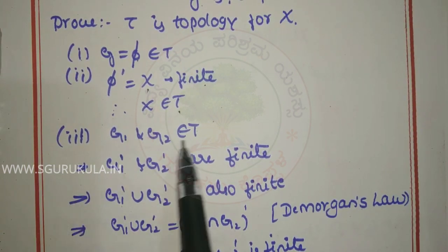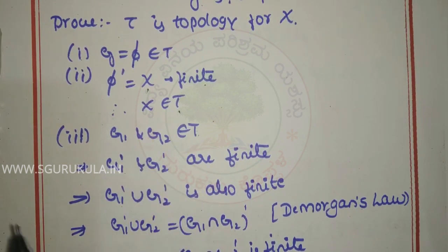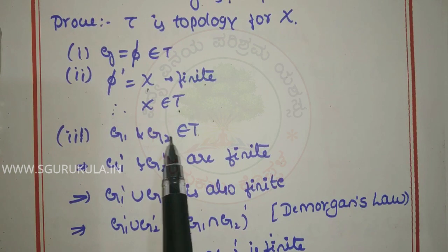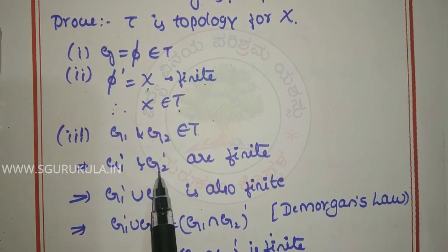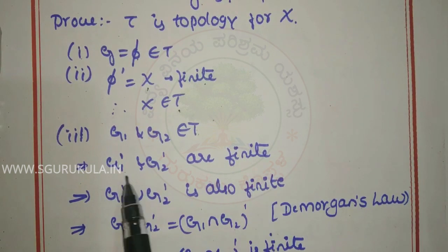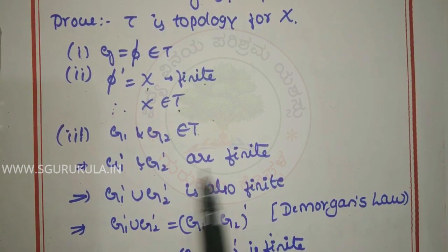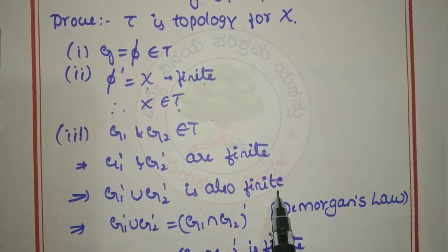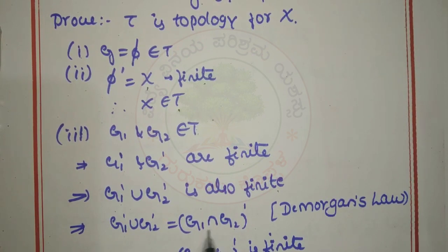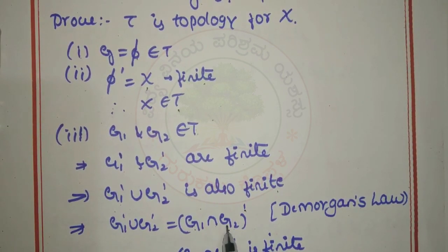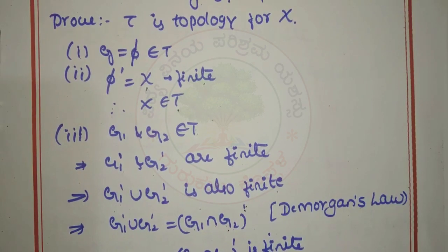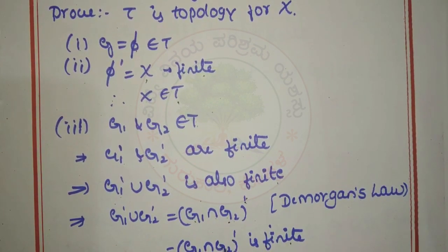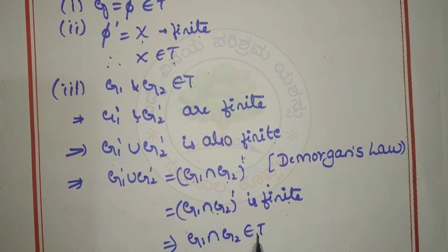Third condition: suppose G1 and G2 are any two sets in T whose complements are finite, so G1' and G2' are finite. Then G1' union G2' is finite. Applying De Morgan's law, G1 intersection G2 whole complement is finite. Since that complement is finite, G1 intersection G2 belongs to T.